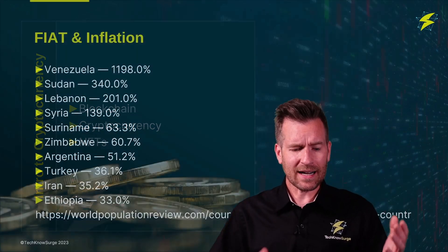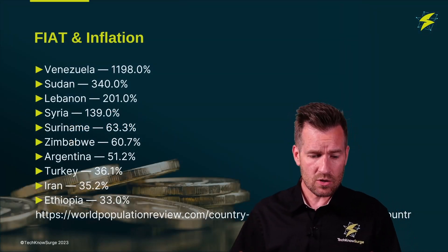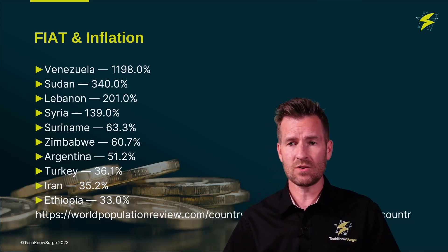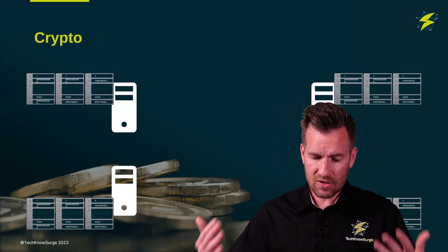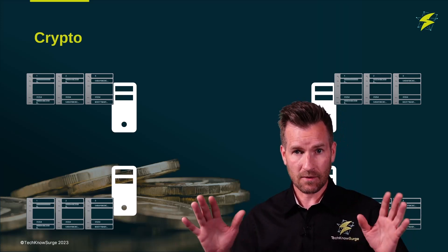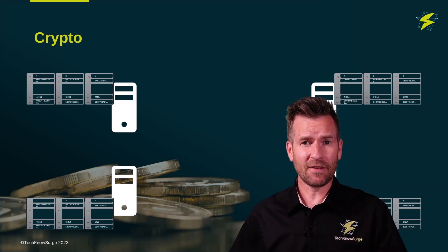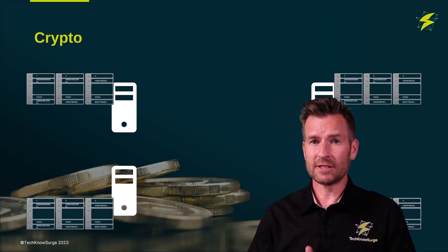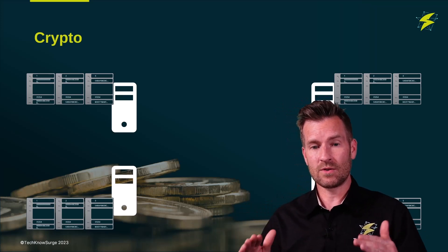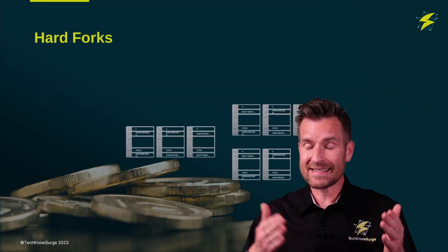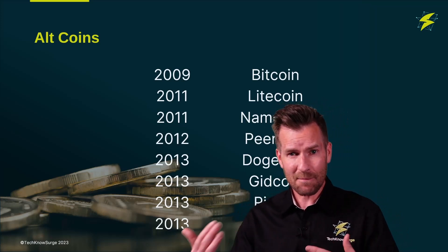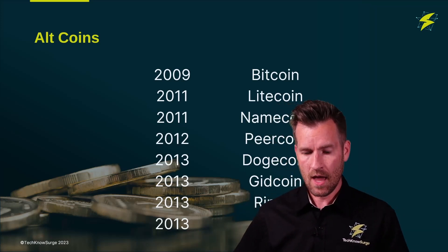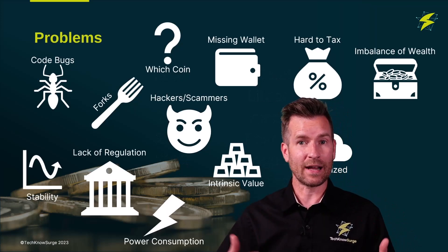So then we got into cryptocurrency. We talked about what fiat currency is and some of the issues with fiat currency, and how cryptocurrency attempts to overcome some of those issues. We also talked about how it uses blockchain, and specifically distributed blockchain, to have a decentralized form of money. But since it's based off of technology, there are some issues. We develop things like hard forks, or there are a lot of other alternative coins that try to compensate for some of these technical issues. But there are still quite a few problems when it comes to cryptocurrency.